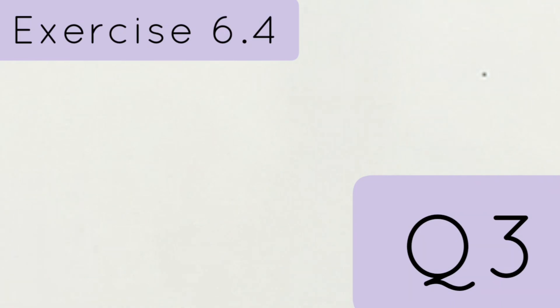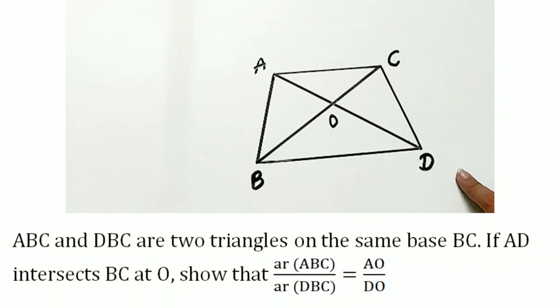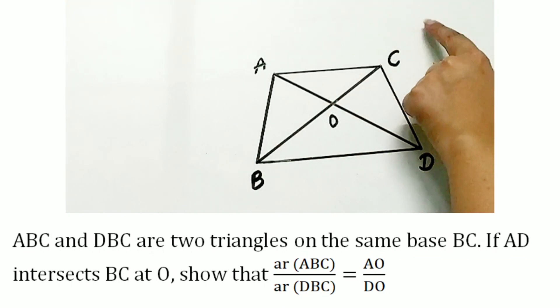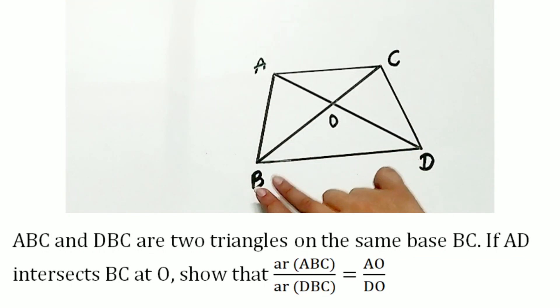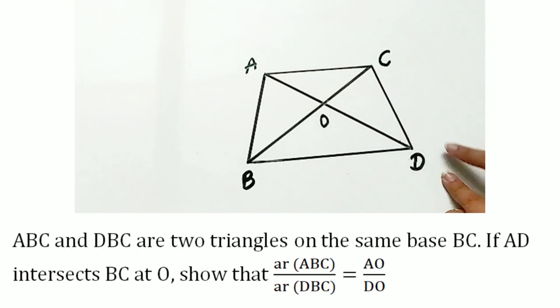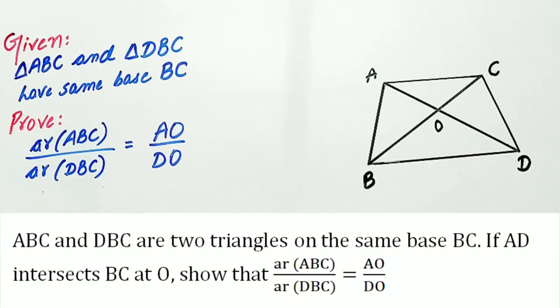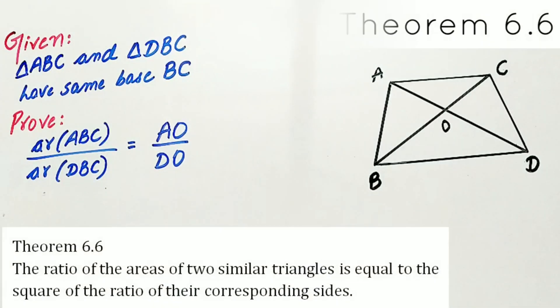Problem 6.4 says: In the figure, ABC and DBC are two triangles on the same base BC. If AD intersects BC at O, show that the area of triangle ABC divided by the area of triangle DBC is equal to AO by DO.